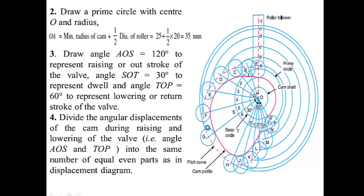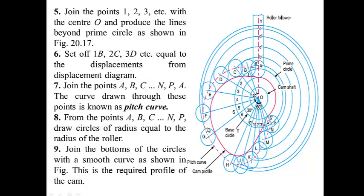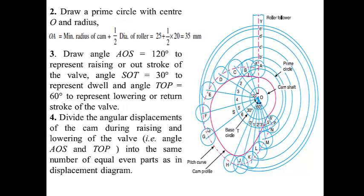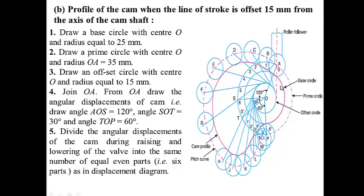This is the actual profile of the cam, known as the cam profile. These are the different steps of the same process discussed here. Now in the case of an offset follower, the initial process is the same. Draw a base circle with center O and radius equal to 25mm. Draw a prime circle with center O and radius equal to 35mm. Draw an offset circle with center O and radius equal to 15mm — this innermost circle is known as the offset circle.